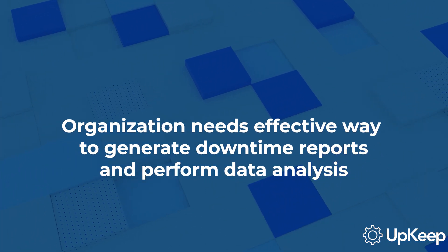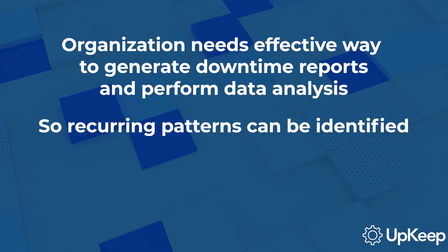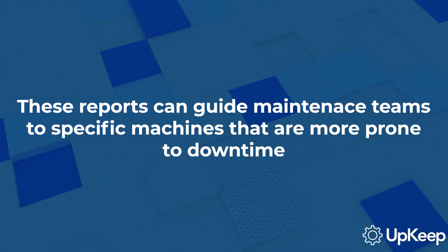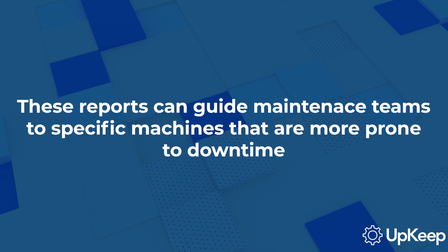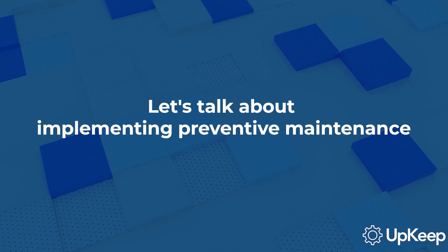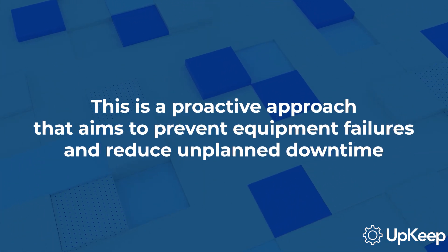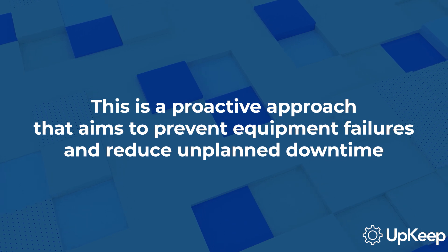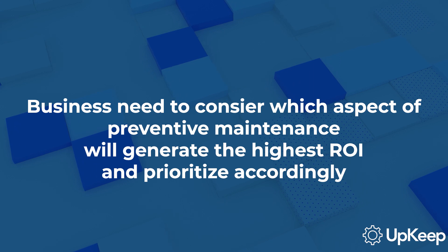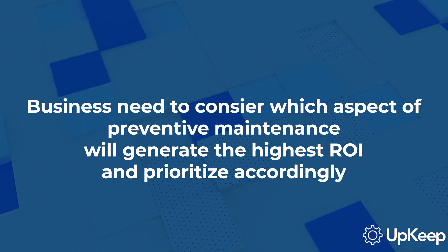Secondly, an organization needs an effective way to generate downtime reports and perform data analysis so recurring patterns can be identified. These reports can guide maintenance teams to specific machines that seem more prone to downtime or particular tasks that seem to be consistently delayed. Now let's talk about implementing preventive maintenance — a proactive approach that aims to prevent equipment failures and reduce unplanned downtime. Each business needs to consider which aspects of preventive maintenance will generate the highest return on investment and prioritize accordingly.